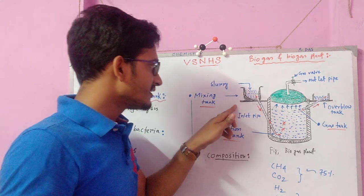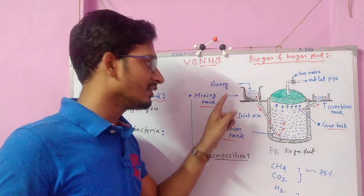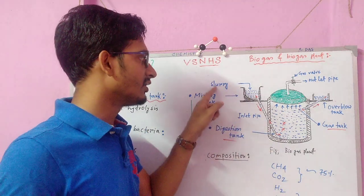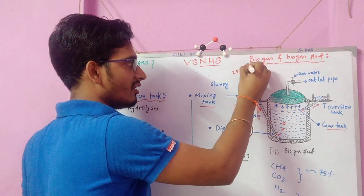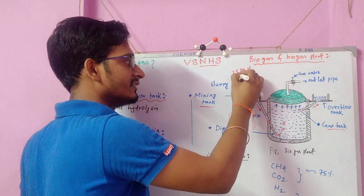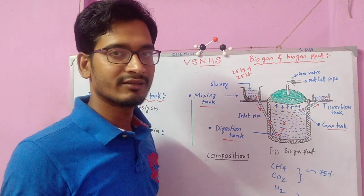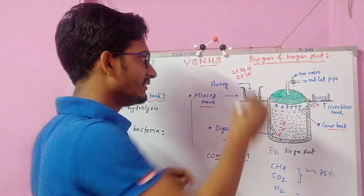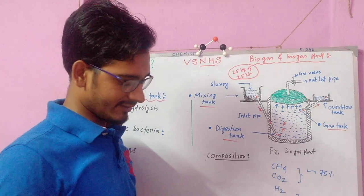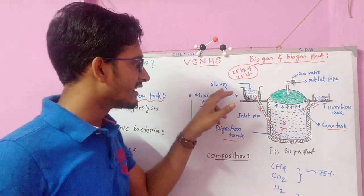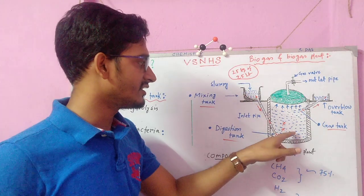What is the role of the mixing tank? In the mixing tank, cow dung and water are mixed — this is called slurry. If you take 25 kg of cow dung, you will have to take 25 liters of water. It is found that if you maintain this composition, the maximum yield is obtained. This slurry, produced by mixing these two, is passed through the inlet pipe and reaches the digestion tank.